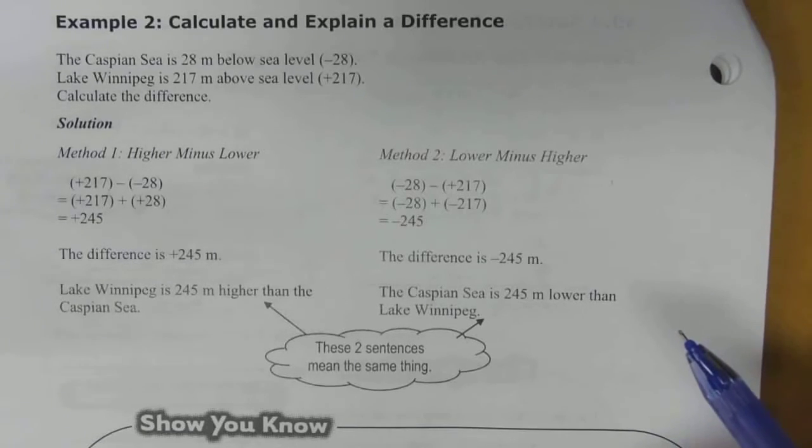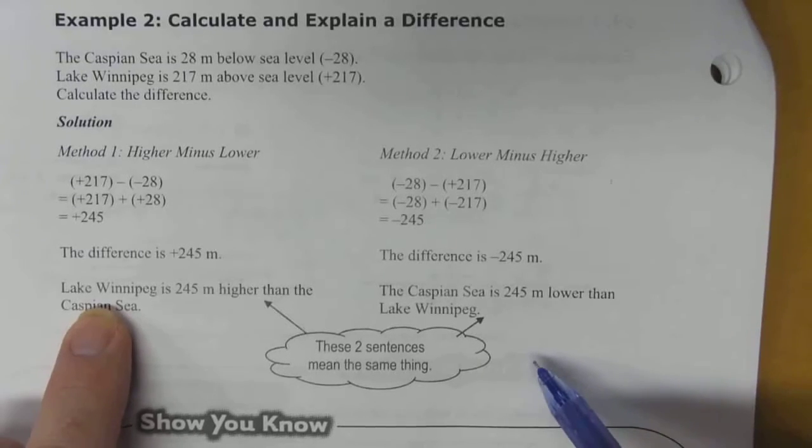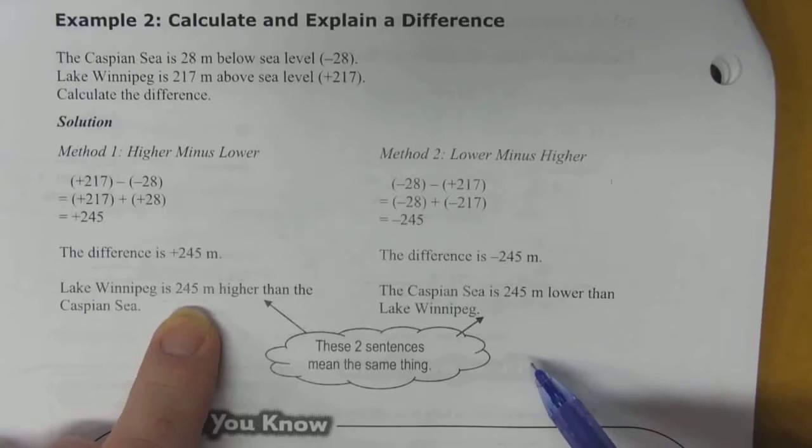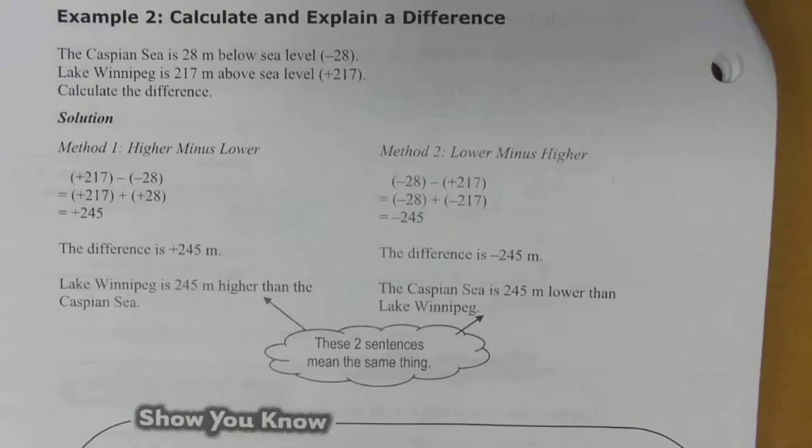Now, Lake Winnipeg is above sea level, and Caspian Sea is below sea level. So we know that Lake Winnipeg is 245 meters above or higher than the Caspian Sea.